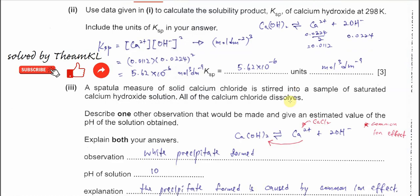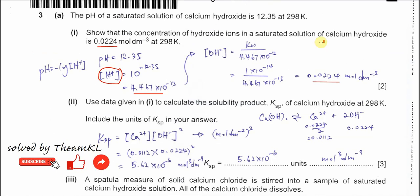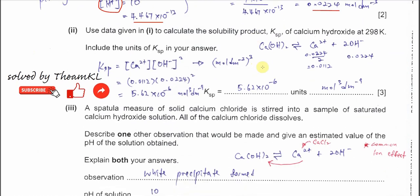Part two: use the data from part one to calculate the solubility product of calcium hydroxide, including units for Ksp. Start from the equilibrium: calcium hydroxide dissociates to form calcium ions and hydroxide ions. The calcium ion concentration is always half the hydroxide concentration. Since [OH⁻] is 0.0224, [Ca²⁺] must be half, so 0.012 mol per dm³.